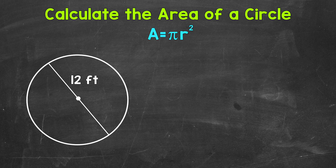We do need to be familiar with both diameter and radius when we work with circles. The diameter is the distance all the way across a circle — it's a line segment that connects two points on the circle and has to go through the center. The radius is half the diameter, so it goes from the center to any point on the circle.